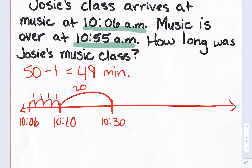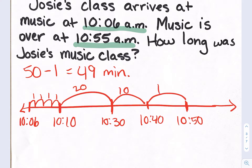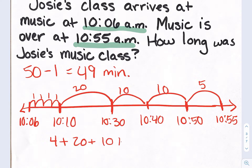And then to get to 10:50, that's another 10 minutes. I could just go by 10s this whole time — another 10. And then my last number is 10:55, because that's the end of class, and 10:50 to 10:55 is 5 minutes. So I could add all of these up: 4 minutes plus 20, plus 10, plus 10, plus 5, which gives me 49 minutes. So this is a different way I could have solved it as well — using a paper clock or a number line are both excellent choices.